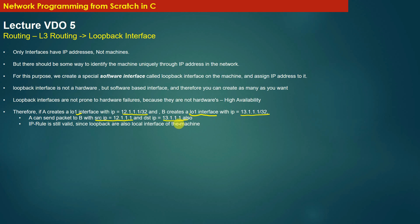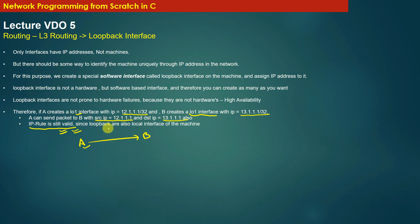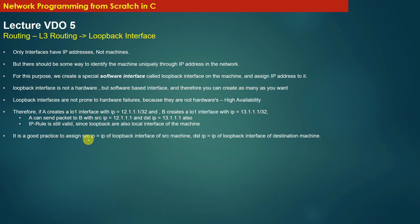Machine A can always send a packet to machine B with source IP 12.1.1.1 and destination IP 13.1.1.1. Our IP rule is still valid: machine A can send a packet to machine B only if it specifies the destination IP as the IP address of one of the local interfaces of machine B. Loopback interfaces are local interfaces of the machine on which they are created.